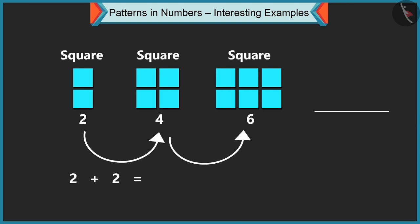Adding two more squares makes it four squares. Adding two more squares makes it six squares. Similarly, every time, the number of squares are increased by two.